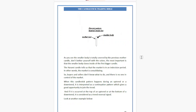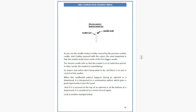As you can see, the smaller body is totally covered by the previous mother candle. Don't worry about the color — the most important thing is that the smaller body closes inside the first bigger candle. The Harami candle tells us that the market is in an indecision period; in other words, the market is consolidating, so buyers and sellers don't know what to do and no one is in control.